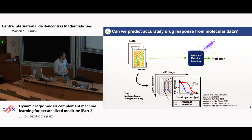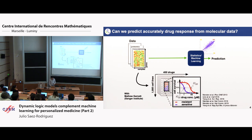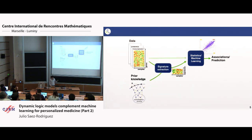As I alluded before, over the years we really tried a lot of different methods on this data, applying machine learning — just inputting your data and asking: can you predict drug response? And as I said, the predictability generally is low and interpretability is very, very limited. That was why we tried to use other approaches that use biological knowledge.